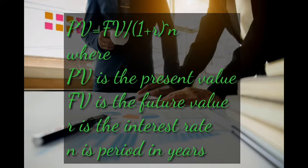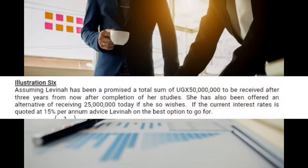The present value of a lump sum has a formula: PV equals FV divided by (1 + r) to the power of n, where PV is the present value, FV is the future value, r is the interest rate, and n is the period in years.